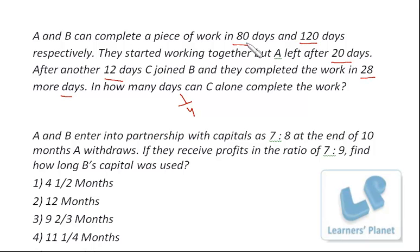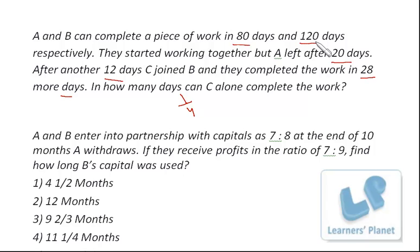For how many days is B working? Initially B is working with A for 20 days, then for 12 days he is working all alone — so 20 plus 12 is 32 days. Then after 28 more days the work was finished. So B worked for 20 plus 12 plus 28, that is 60 days. Now B can complete the work in 120 days, so in 60 days he might have done half of the work.